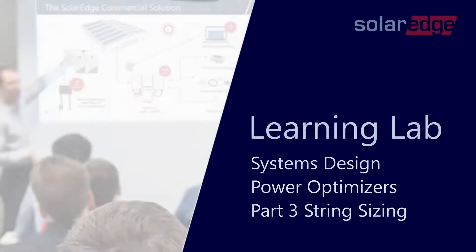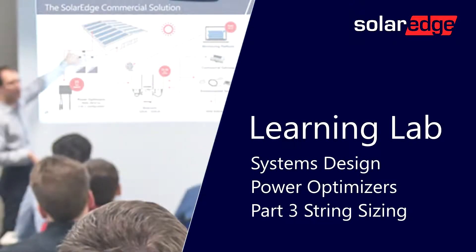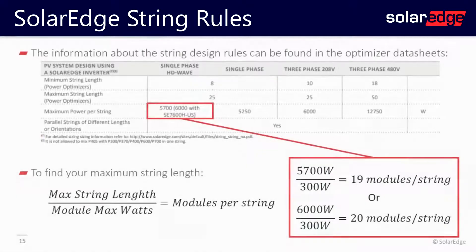Now that we understand how to select an optimizer for a module, we should consider how to string those modules. Information about stringing can be found on the spec sheet. If you look at the bottom of the spec sheet, it will say maximum power per string. With our single-phase HD Wave inverters, a 6 kilowatt inverter and below has a maximum string length of 5,700 watts.